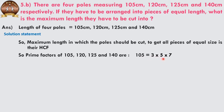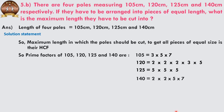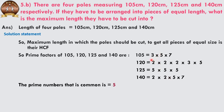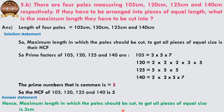The prime factors of 105 are 3, 5, and 7. For 120, we have 2×2×2×3×5. For 125, we have 5×5×5. For 140, we have 2×2×5×7. The common prime factor across all four numbers is only 5, since 3 is not in 125, 2 is not in 125, and 7 is not in every number. So the HCF of the four numbers is 5.